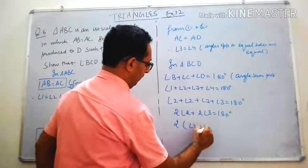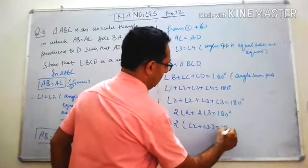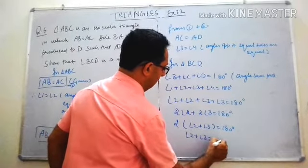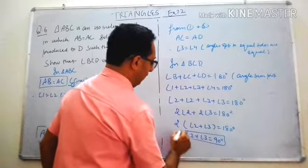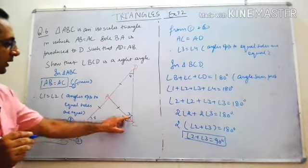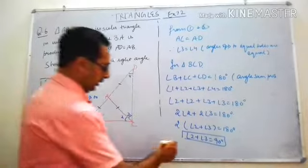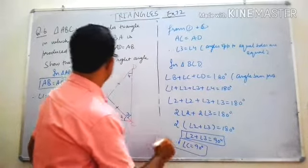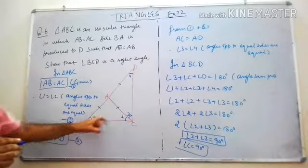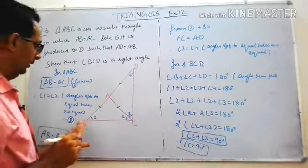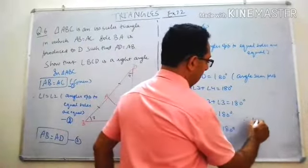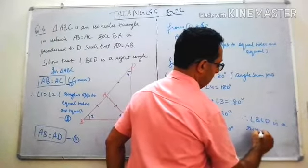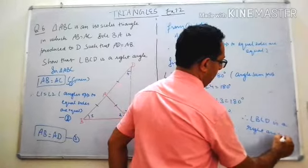Dividing by 2: angle 2 + angle 3 = 90°. Since angle C = angle 2 + angle 3, therefore angle C = 90°. Therefore angle BCD is a right angle — hence proved.